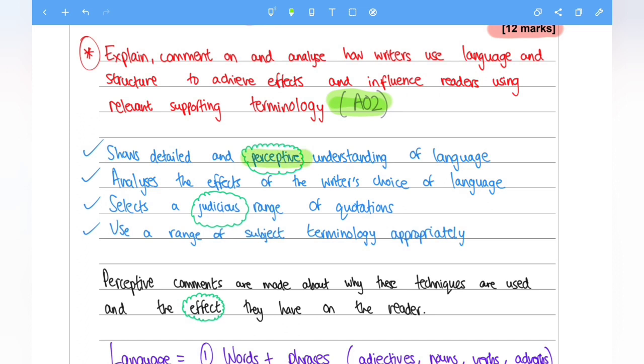So how do you provide perceptive understanding? You need to look at the quotation in different angles. You look at the quote, the connotations of the words, the explicit, so the obvious information, the obvious things you can understand from it and also the implicit, the not so obvious. This is how we show perceptive understanding of language.